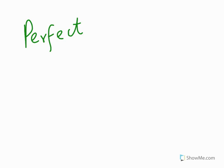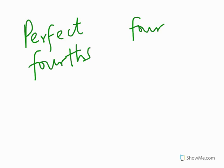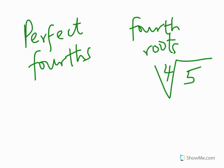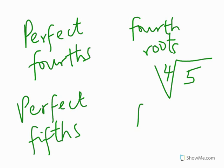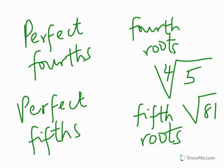In the same way, we also have perfect fourths and, of course, the inverse — fourth roots. How do we write fourth roots? We write the 4 inside the radical symbol. We also have perfect fifths and fifth roots. To write the fifth root of 81, we write 81 and put 5 inside the radical symbol. We have sixth root, seventh root, eighth root, ninth root — as many as you can say. So that is what we mean by roots.